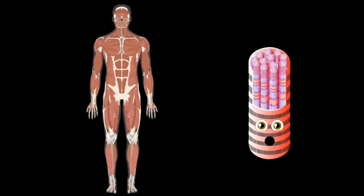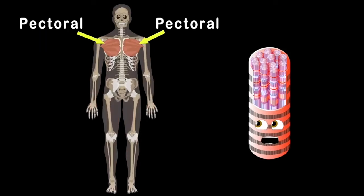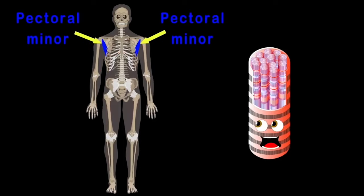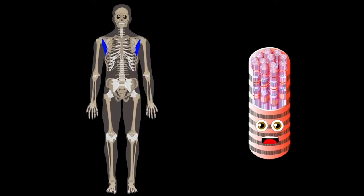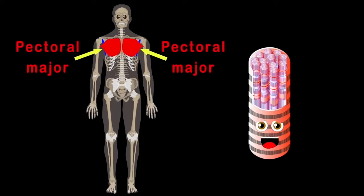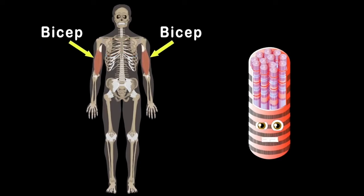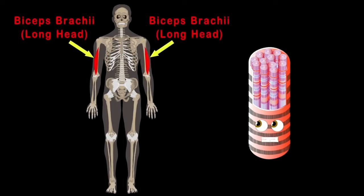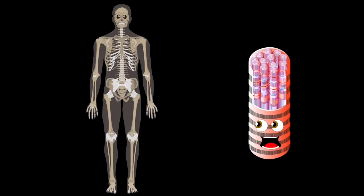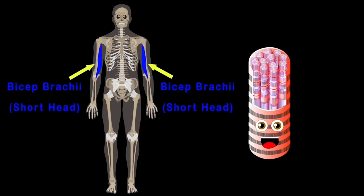The next muscle we'll look at are the pectorals on your chest. There are two parts to this muscle. There's a pectoral minor which is connected to your ribs, then the pectoral major — it makes your chest look really big. On the upper arm is your bicep; they help you lift heavy things. The bicep brachii long sits on the outside, while the bicep brachii short lets you lift things with no harm.